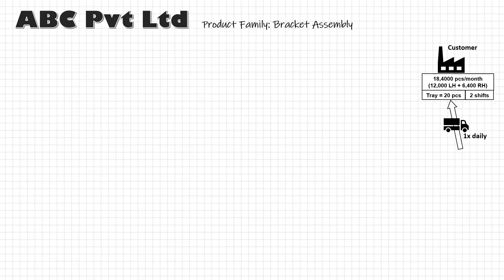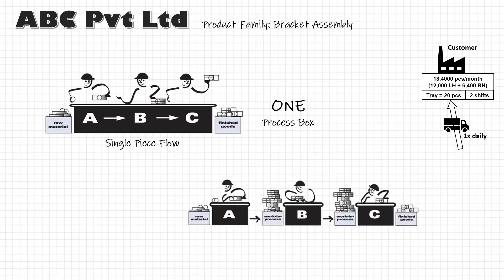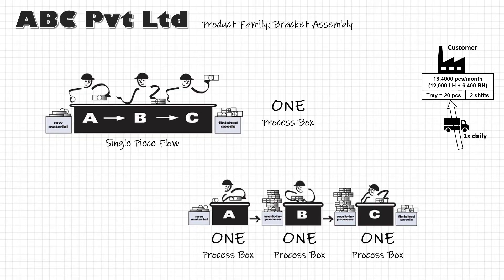Next, we will draw basic production processes using a process box. Making one process box for every single process step would make the map enormously large. So we use the process box to indicate one or more processes where there is a continuous flow of material. The process box stops wherever processes are disconnected and material flow stops. For example, an assembly process with several connected workstations — even with some WIP between stations but continuous flow — would be drawn as a single process box. But if one assembly process is disconnected from the next and inventory is accumulating and being moved in batches, then individual process boxes will be used.